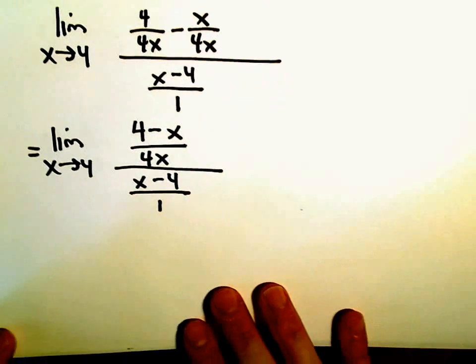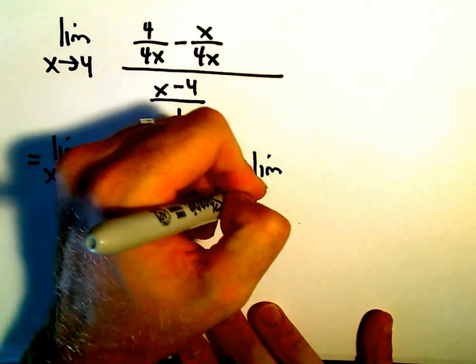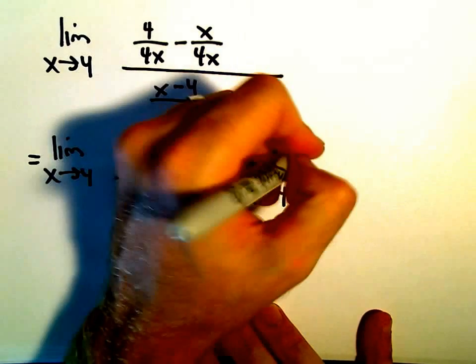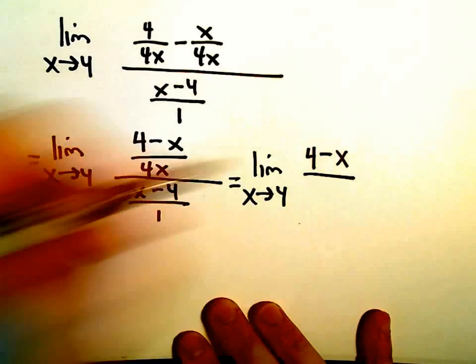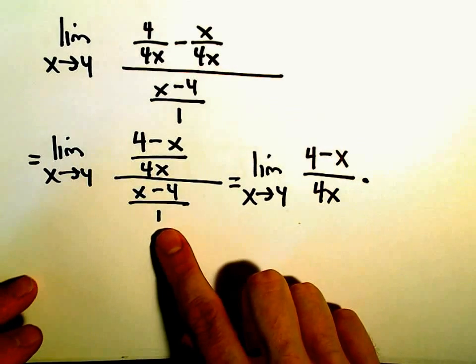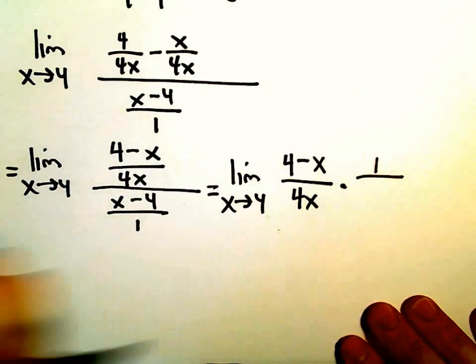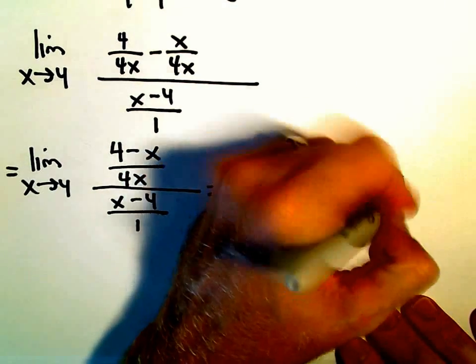Well, we've got a fraction over a fraction. So what do we do in this case? Well, to divide fractions, we leave the numerator alone. So 4 minus x over 4x. And then we take the denominator and we flip and we multiply. So I'm going to multiply by 1 over x minus 4.